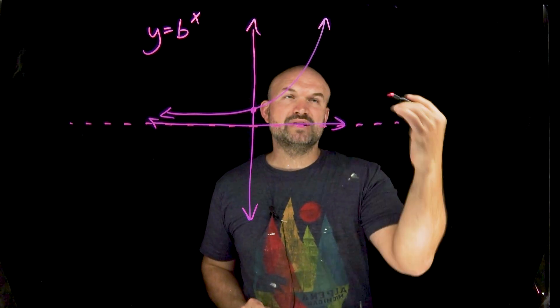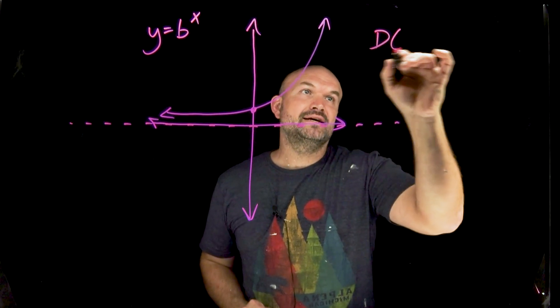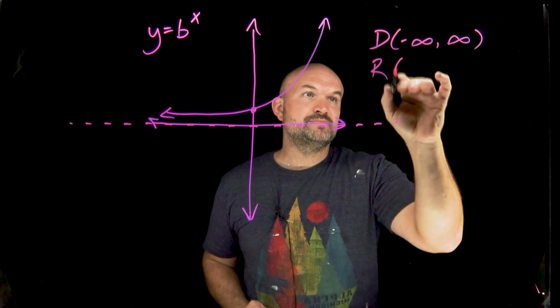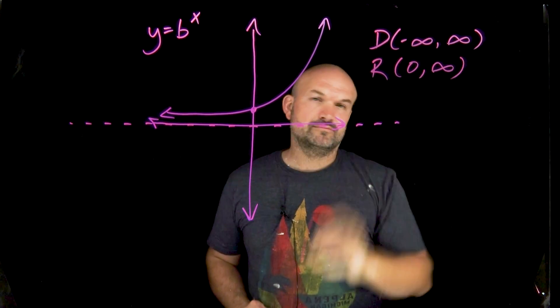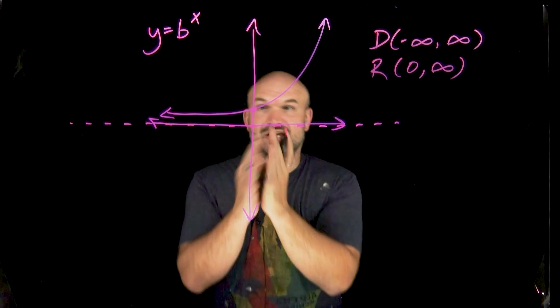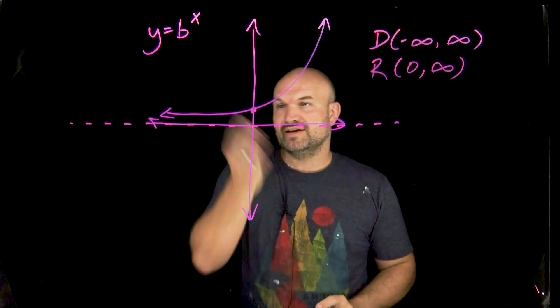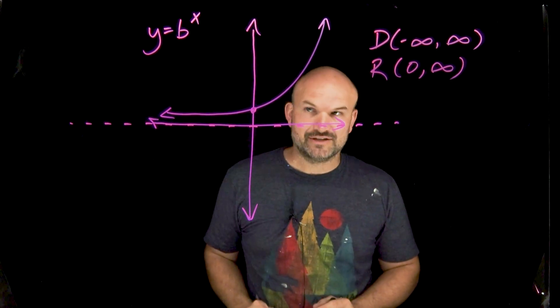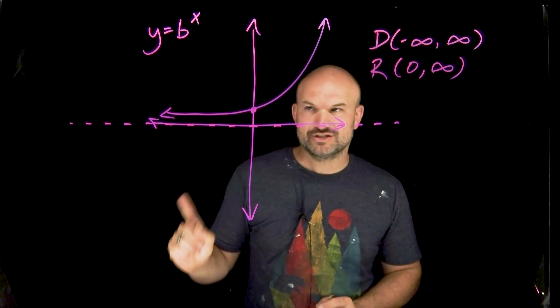Based on this information, we can realize or understand that the domain is going to be from negative infinity to positive infinity. The range is going to be from zero to infinity. Remember, the domain represents all the x values, so from left to right. And the range represents all the y values. That's going to be from down to up, but it does not go into any negative values. That's going to be pretty important, but we'll get to that in just a second.